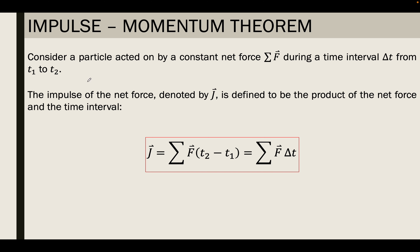If we consider a particle acted on by a constant net force during a time interval delta t — from t sub 1, our initial time, to t sub 2, our final time — we can solve for the impulse of the net force, denoted by capital letter J. It is defined as the product of the net force and the time interval. So J is equal to the net force F times delta t, where delta t equals t sub 2 minus t sub 1.